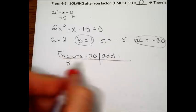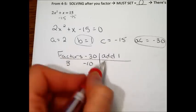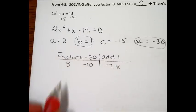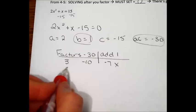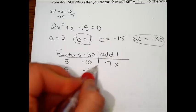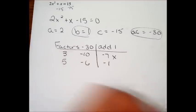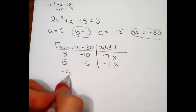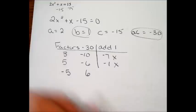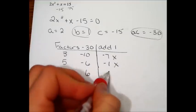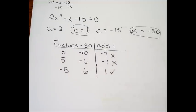You might think 3 and negative 10. Unfortunately, that adds to negative 7. You might think 5 and negative 6. 5 and negative 6 is really close, but it adds to a negative 1. So what I'm going to do is make that a negative 5 and a positive 6. That'll give me a positive 1, so I know that that one's the answer.